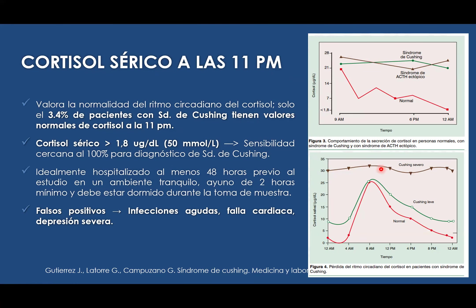Hay un concepto importante: el ciclo circadiano. Este ciclo es muy importante conocer porque nos va a permitir saber la fisiología y la fluctuación del cortisol en nuestro organismo. A partir de las 11 o medianoche el cortisol comienza a descender de manera progresiva por fisiología, disminuyendo las funciones metabólicas también. A partir de las 4 de la mañana el ciclo circadiano empieza a generar una liberación de cortisol de manera progresiva, teniendo su pico nadir a partir de las 8 de la mañana. Con el transcurso de las horas el cortisol comienza a descender para repetir el ciclo.